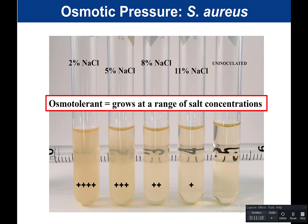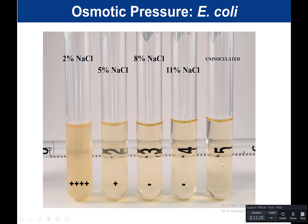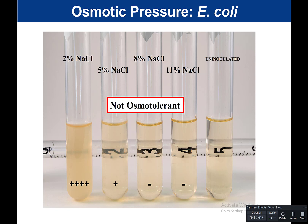For E. coli, here is our uninoculated control. At 11% salt, no growth. At 8% salt, no growth. At 5% salt, very little growth — I would quantitate this as 1+. But at 2% salt, it grew very well, so 4+. For E. coli, it grew at 2% salt and a tiny bit at 5%, but not at 8% or 11%, which tells us that this bacteria is not osmotolerant. It is not able to tolerate changes in osmotic pressure or high salt concentrations.